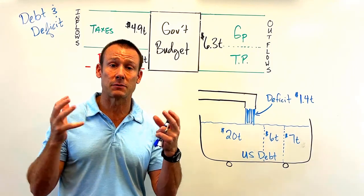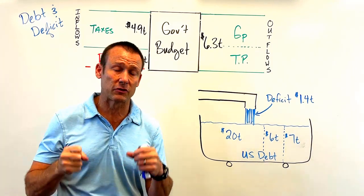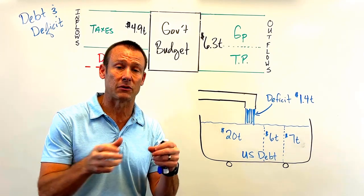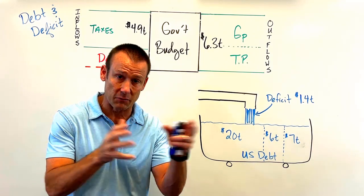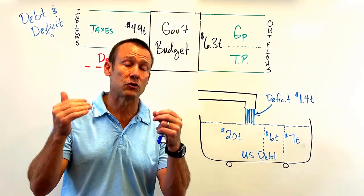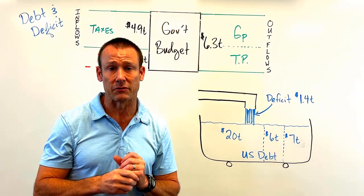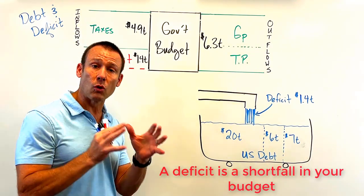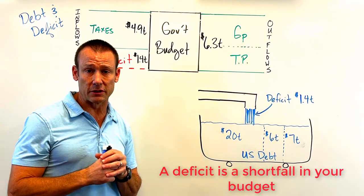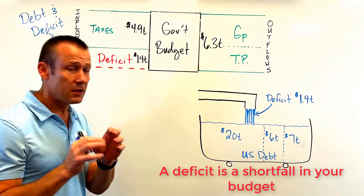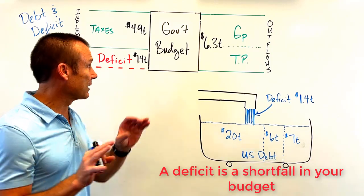Let's start off with: what is a deficit? In this video we're focused on the United States as our domestic country, so we're talking about the U.S. government deficit. A deficit quite simply is a shortfall in your budget.